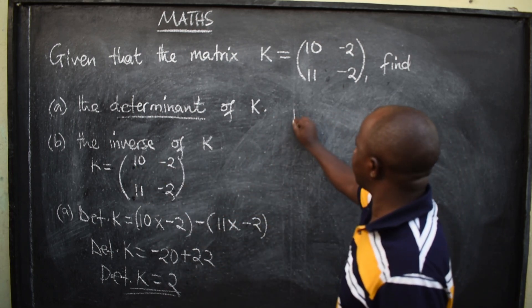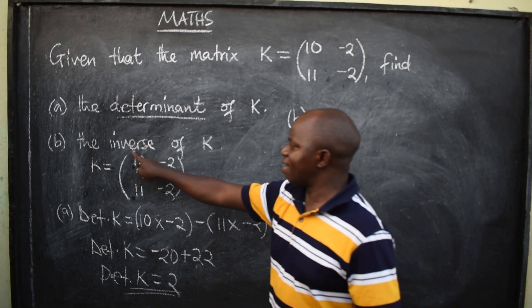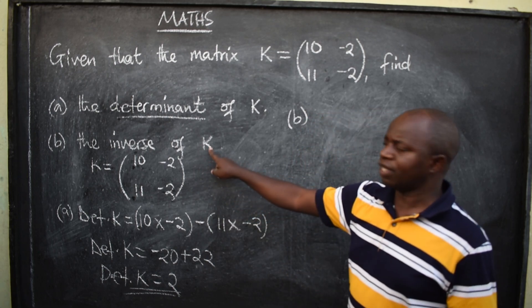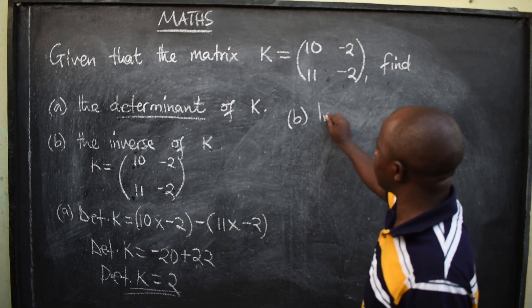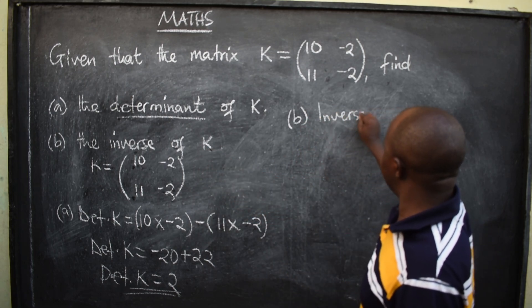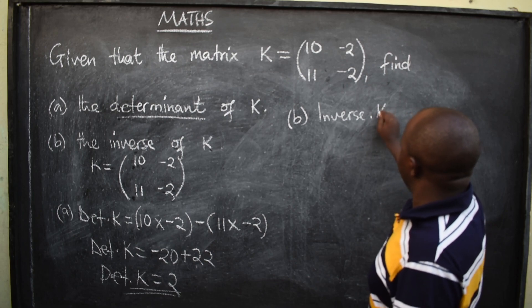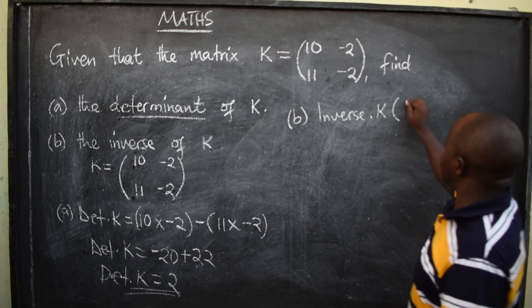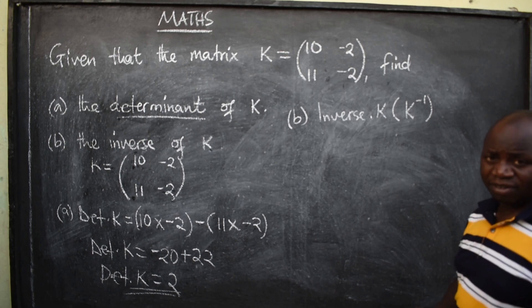Part B says, you find the inverse of matrix K. So, I'm going to say, inverse of K, which can also be written, K inverse like this, will be equal to...